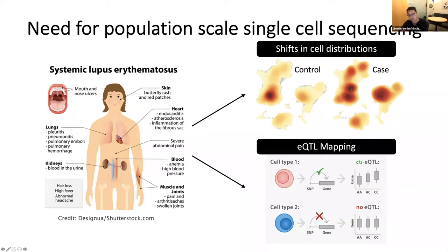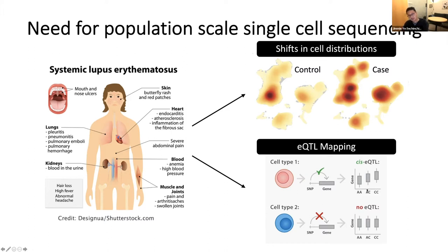What my lab has been interested in is using single cell genomics to understand complex human diseases. One of the diseases we're interested in is systemic lupus erythematosus, a systemic autoimmune disease that's extremely heterogeneous. To understand a complex disease like this, there's really a need to scale the number of samples processed using single cell sequencing, if we want to detect subtle shifts in cell composition or activation state. There's also application for genetic analysis — collecting single cells from many people with matching genotypes could allow us to associate genetic variants with gene expression in specific cell types, detecting cis-eQTLs that are cell-type specific.